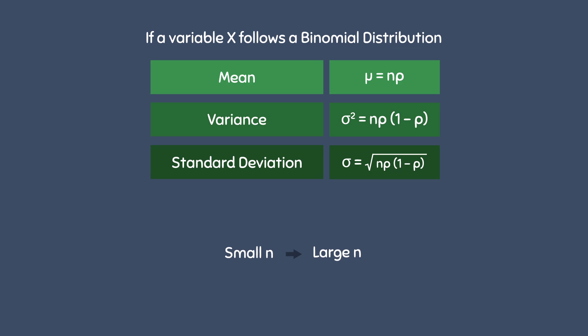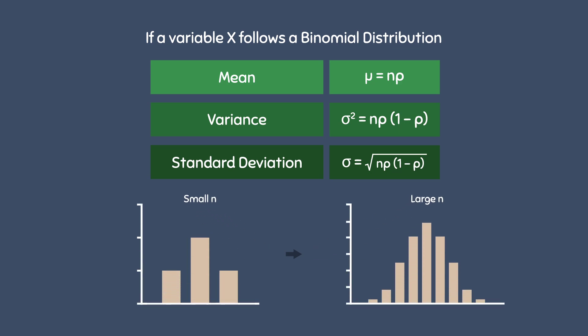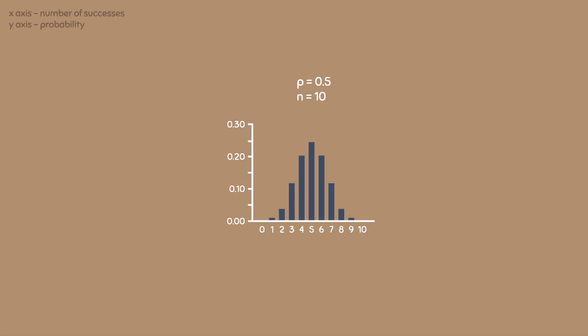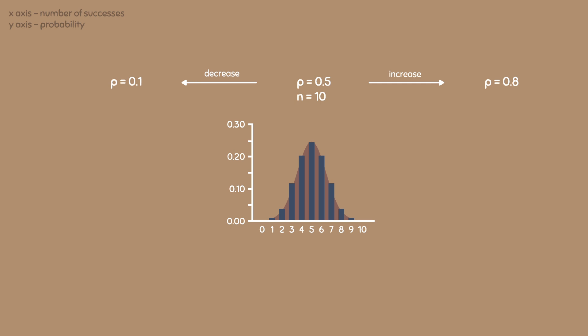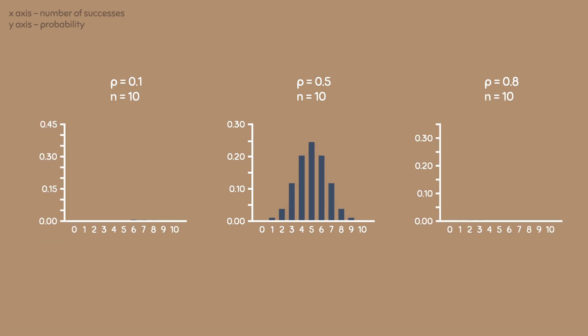We saw that as n increases, the binomial distribution starts to look like the normal distribution. Now let's see what happens when we change the value of p. Here I have a bar graph with a little p of 0.5 and an n of 10. By looking at this distribution, we can say that it is roughly normally distributed. If we increase or decrease the value of p while keeping the value of n the same, we see that the shape of the distribution changes. As a result, we can say that the shape of the binomial distribution depends on the value of p.